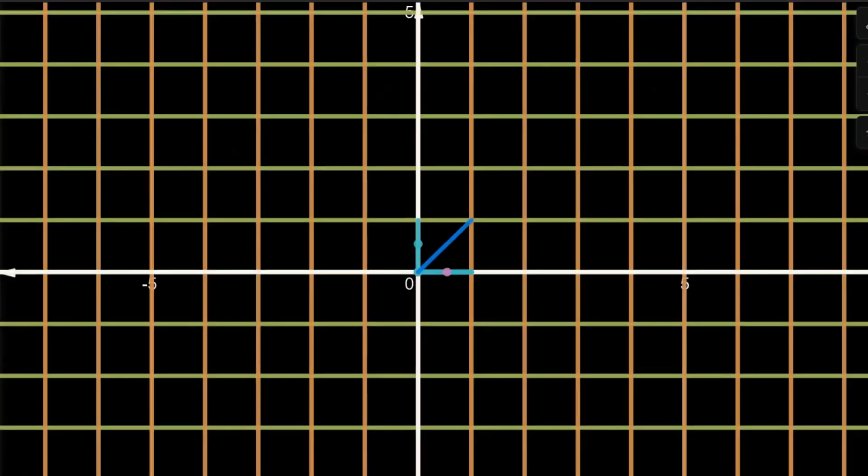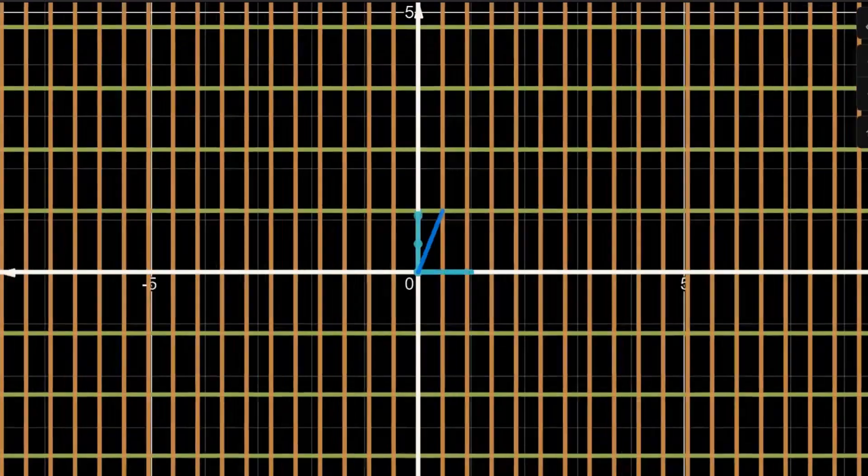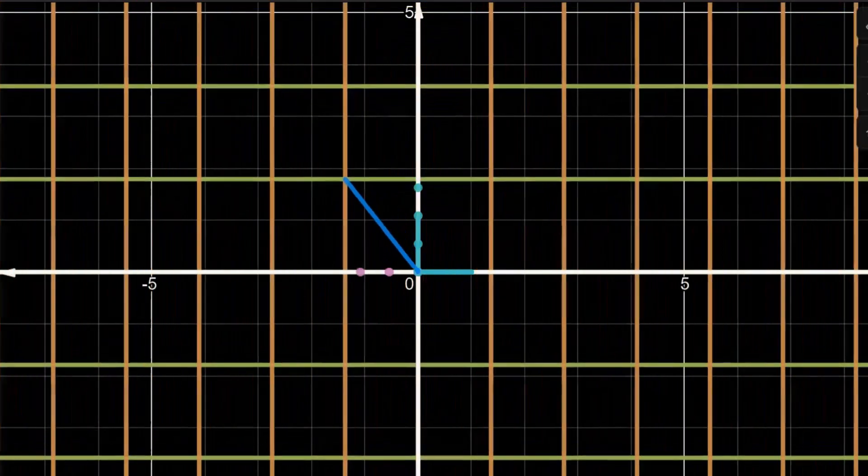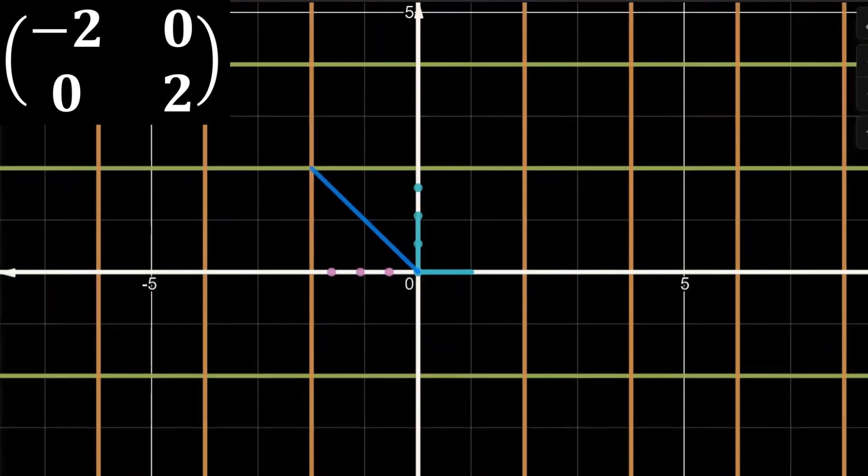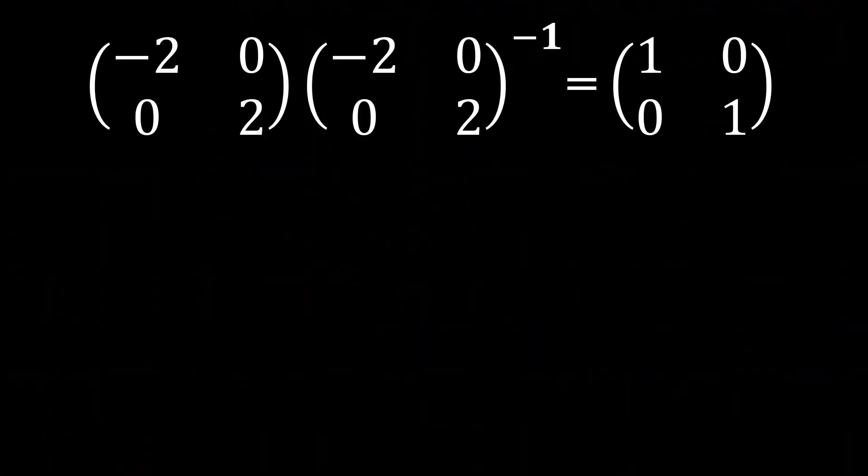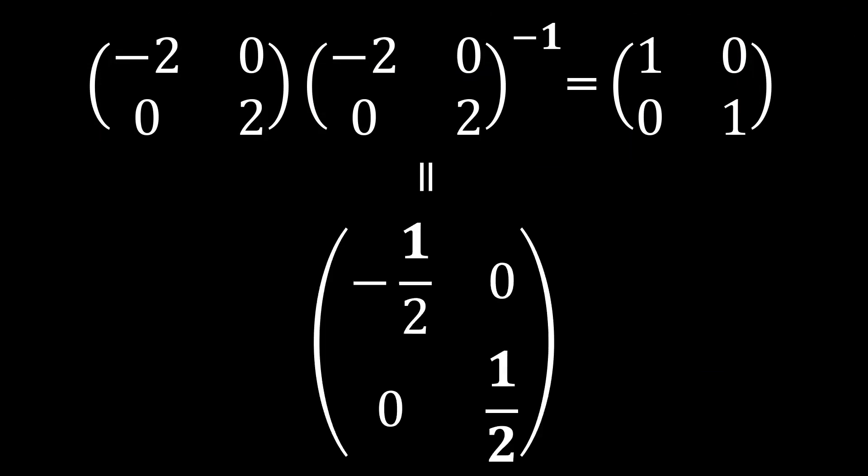Let's visualize an example now. This transformation is isomorphic to this matrix. It's clear here that the inverse needs to scale down the i and j hat, and of course, to flip the i hat. That is to say, by what shall we multiply the matrix we have to get an identity? And here it is.